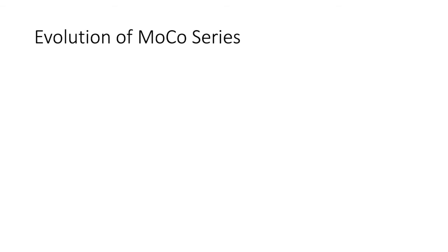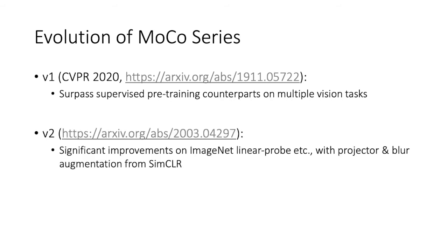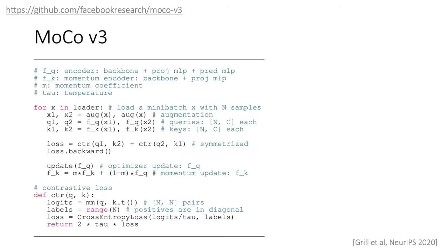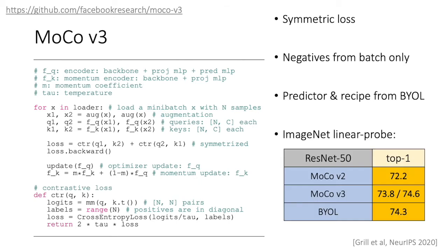MoCo has been evolving. In V1, MoCo pre-training surpassed supervised counterparts on multiple vision tasks. MoCo V2 mainly improves on the ImageNet linear probing performance. In this work, we use V3, which strikes a better balance among simplicity, accuracy, and scalability. Here is the pseudocode for MoCo V3 — please refer to the released code for all details. Different from V1 and V2, we use symmetric loss, get negative pairs directly from the same batch, and borrow the predictor and augmentation recipes from BYOL. Overall, MoCo V3 obtains state-of-the-art ImageNet linear probe performance with a ResNet-50 backbone, on par with BYOL.